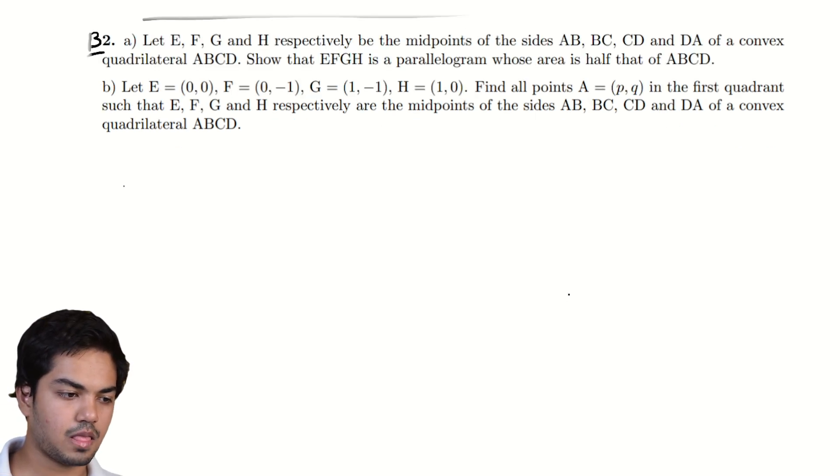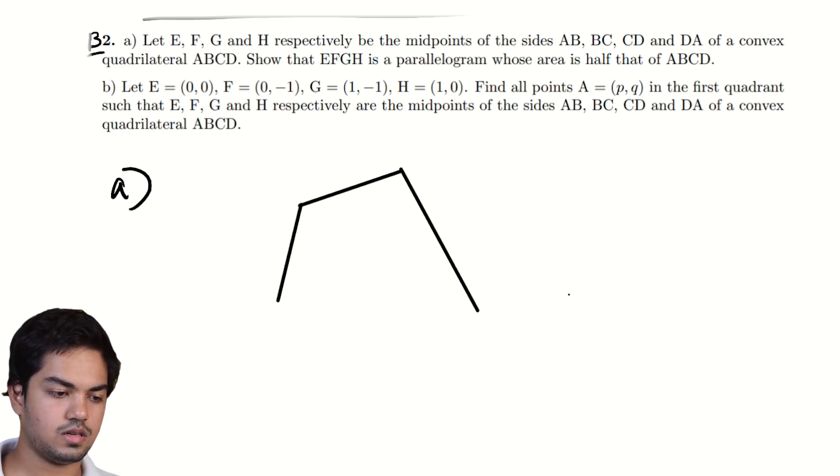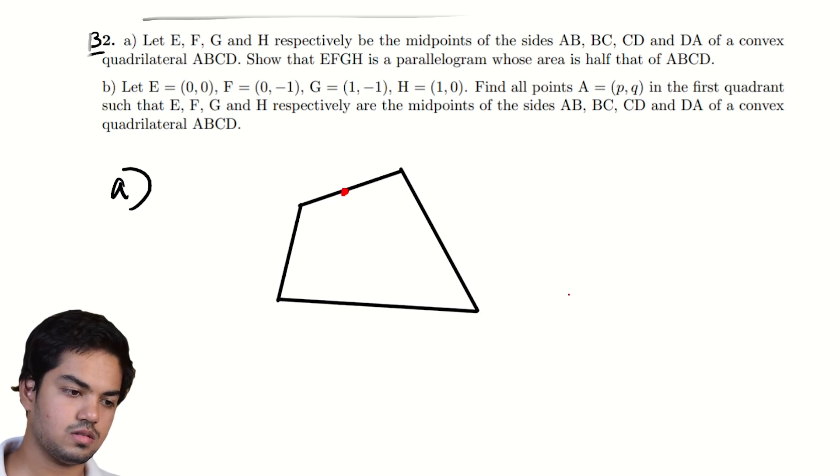So for part A we have A, B, C, D and go for a general quadrilateral and look at the midpoints. So say this is the midpoint, this is the midpoint, this is the midpoint and this is the midpoint.